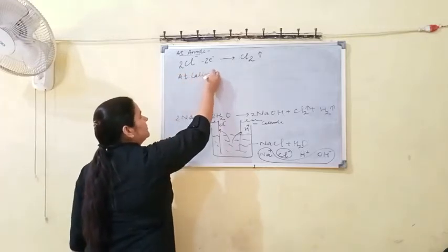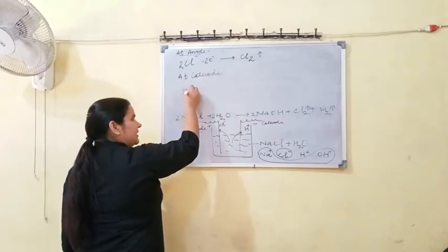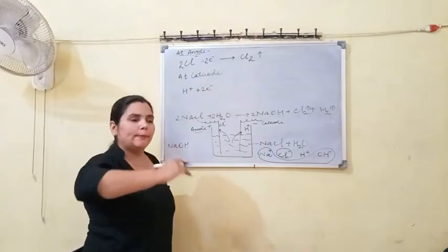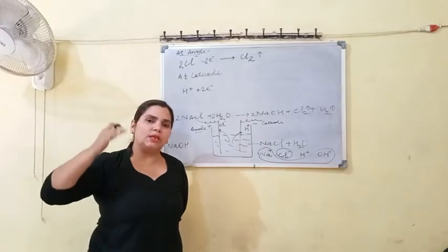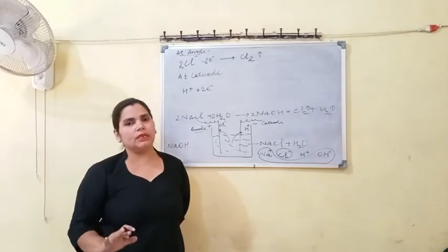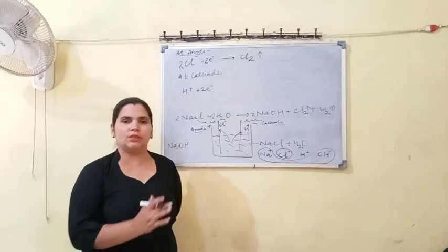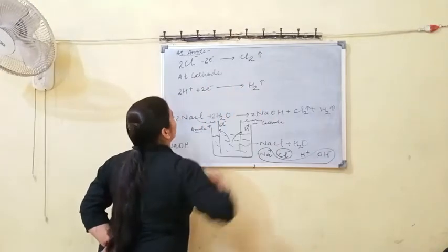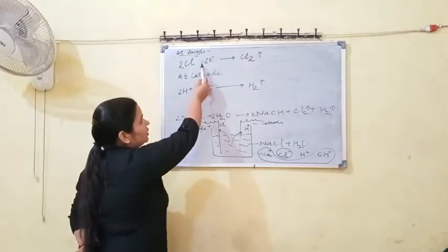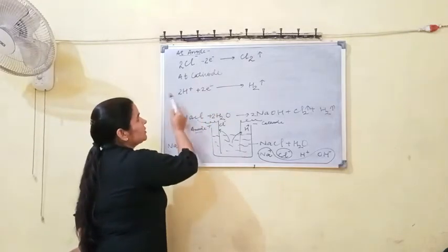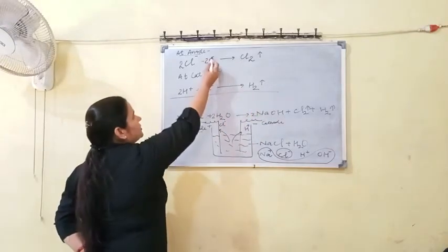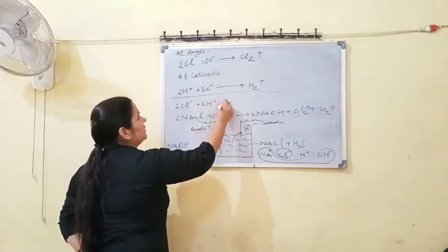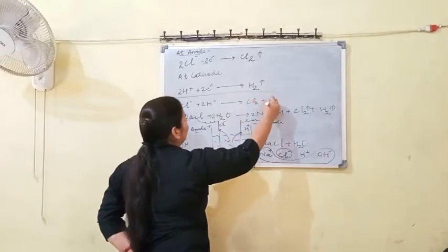At the cathode: the electrons released at the anode are gained here. The H⁺ ions absorb these electrons and are converted into hydrogen gas H₂. When we add both electrode reactions together, the plus and minus charges cancel out, and the overall reaction becomes: 2Cl⁻ + 2H⁺ → Cl₂ + H₂.